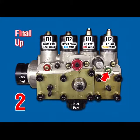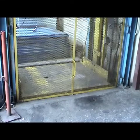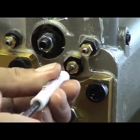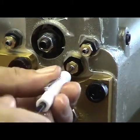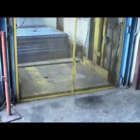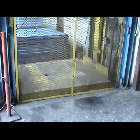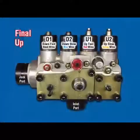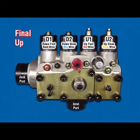UA Up Acceleration. Car at lower floor with no load. Turn UA counterclockwise two-and-a-half turns from fully closed position. Register an up call and observe up acceleration. Turn UA counterclockwise for faster or clockwise for slower up acceleration. Car should reach full speed in no more than two-and-a-half feet. Do not drag out acceleration.